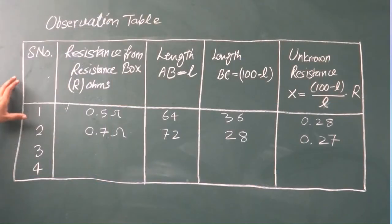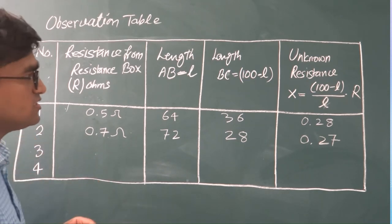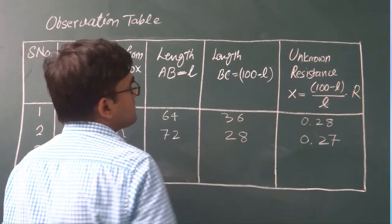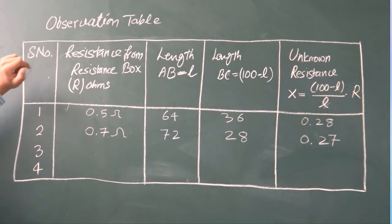As you can see, this is the observation table for the meter bridge experiment, in which you are determining the unknown resistance, which is x. So let's understand the table.